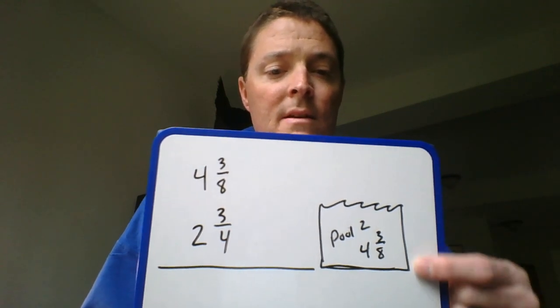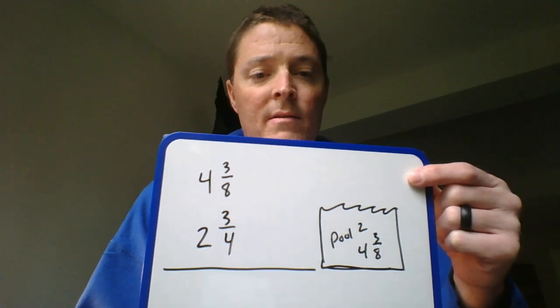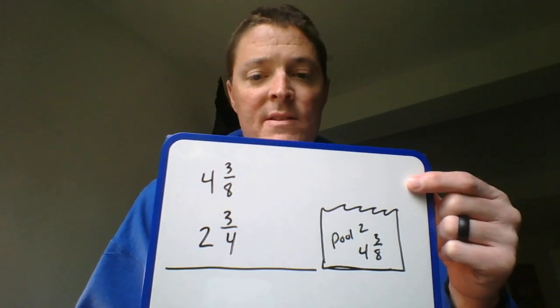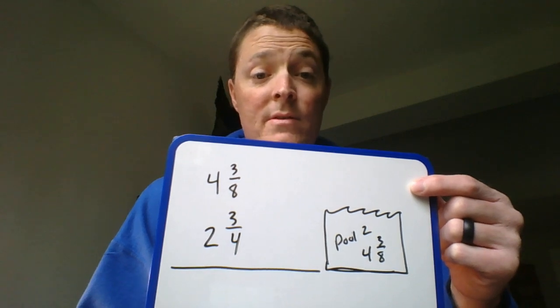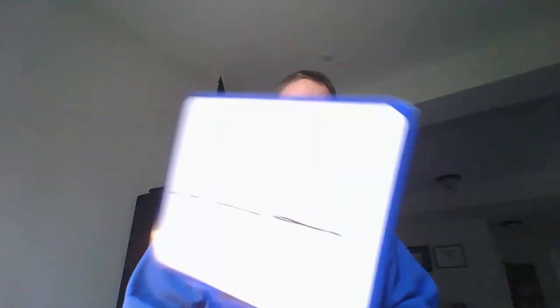So four and three-eighths feet deep. Now, this surface is going to go up higher for pool number three because it said it was two and three-fourths feet deeper. So let me adjust my drawing. So it says pool three, two and three-fourths. There's my picture.